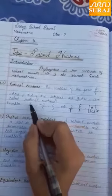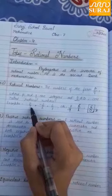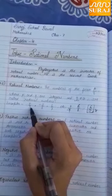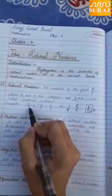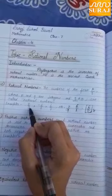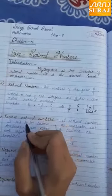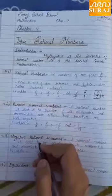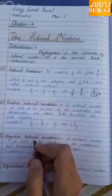Jo P and Q hain vo integers honge. Aur integers kya hote hain — negative and positive integers. 0 is also an integer, so 0 is also a rational number.